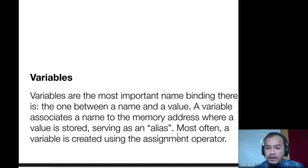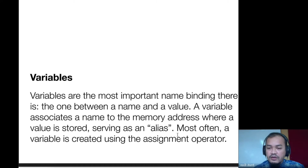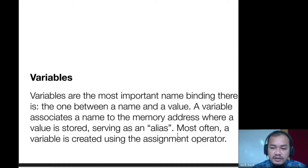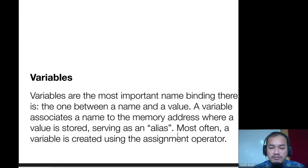In our memory — in our brain — we also have variables. We have short-term variables and long-term variables. When we read something, our brain stores the information as short-term memory first. When that value is important, you repeat it, keep reading and understanding it, and then it becomes long-term memory. Even long-term memory can still be lost.